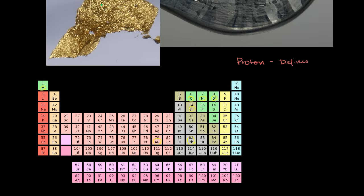Oxygen has eight protons. If you were to add another proton, it wouldn't be oxygen anymore — it would be fluorine. So the number of protons defines the element.